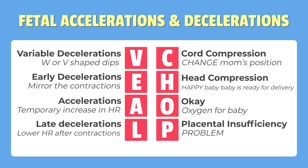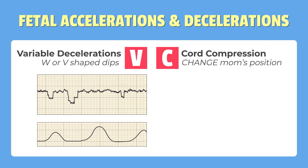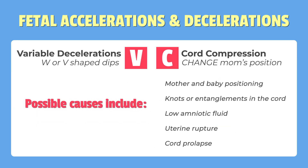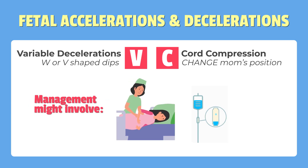V stands for variable decelerations, often caused by cord compression. These are unpredictable drops in the heart rate that could indicate the baby's blood supply is limited due to umbilical cord issues. Possible causes include mother and baby positioning, knots or entanglement of the cord, low amniotic fluid, uterine rupture, and cord prolapse. Management might involve repositioning the mother, administering IV fluids, giving oxygen, or even preparing for a potential C-section.